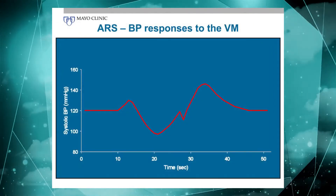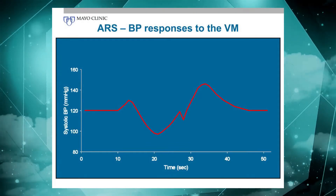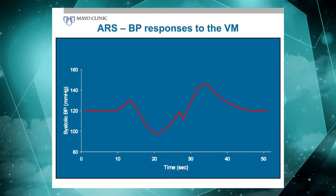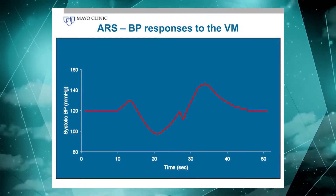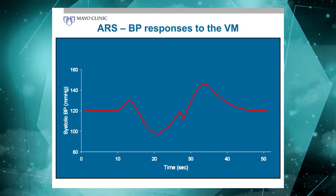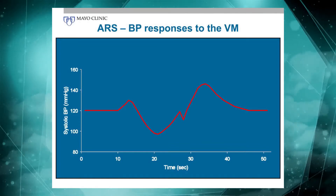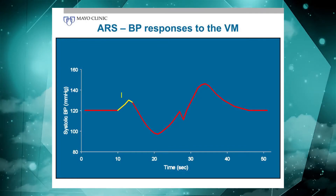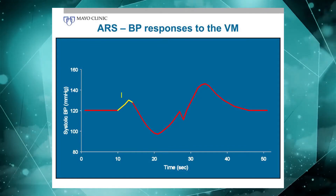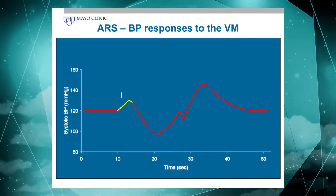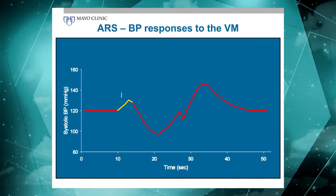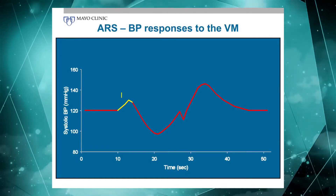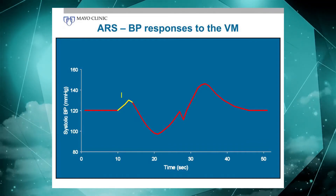In order to understand and interpret adrenergic function and dysfunction using the Valsalva maneuver, you have to understand the physiology underlying the blood pressure responses. It's fairly simple if you split it into the different phases. Phase one is purely a mechanical phase — you blow into that bugle, you increase intrathoracic pressure, there's a fluid shift from central to peripheral compartments, and there's a transient, brief rise in blood pressure detected from the finger. Pure mechanical.